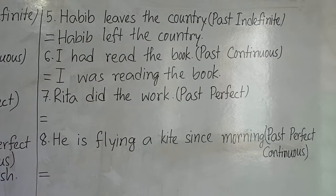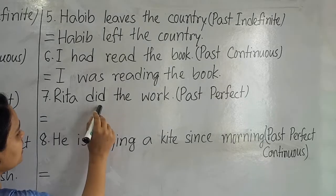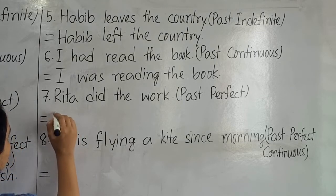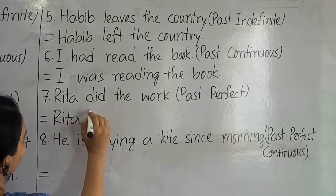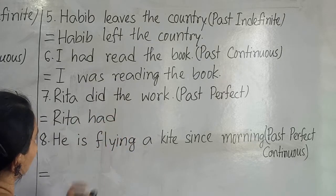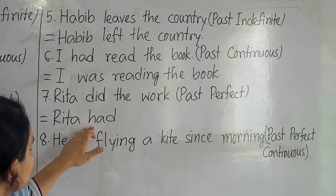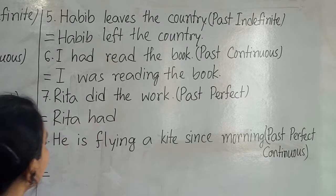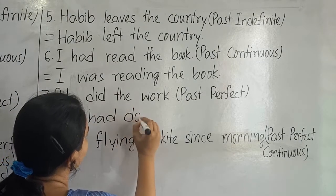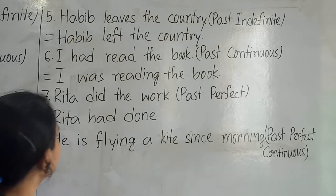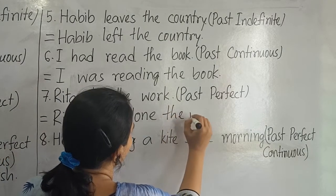Number seven: 'We did the work.' We will change it to past perfect tense. Look at the word 'did' — it is in the past form, the past form of 'do.' We will change it to past perfect tense. Our subject is 'we' and we write 'had' — we use 'had' after any subject, whether singular or plural. The past participle form of 'do' is 'done.' So: 'We had done the work.'